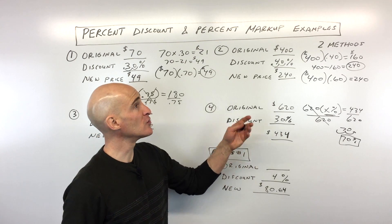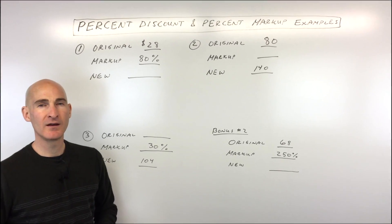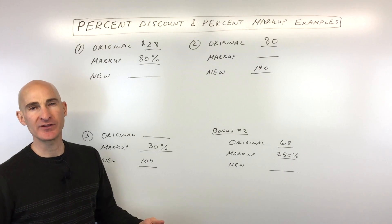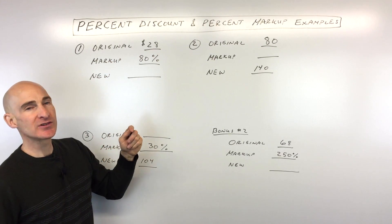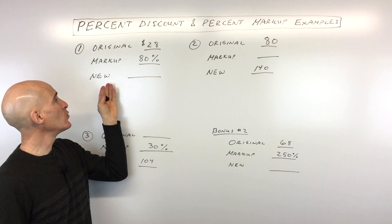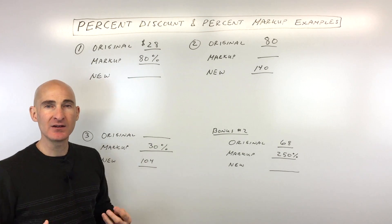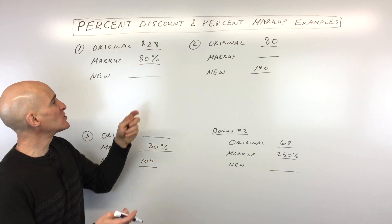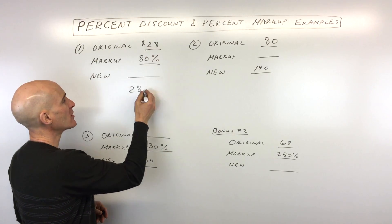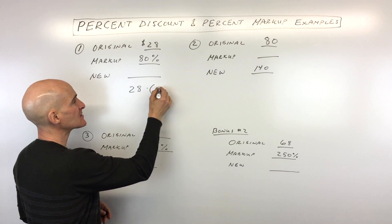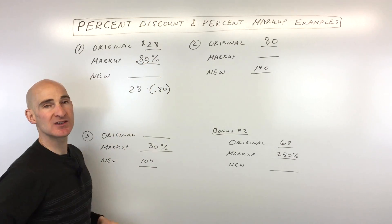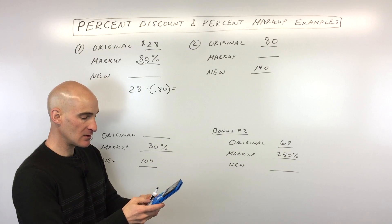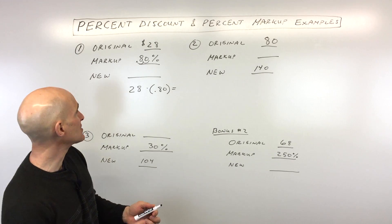Now we're going to talk about percent markup. The original amount is $28 with an 80% markup — like a store marking up merchandise to make a profit. Method one: take $28 and multiply by 0.80, which equals $22.40. That's the additional amount being charged to the customer.